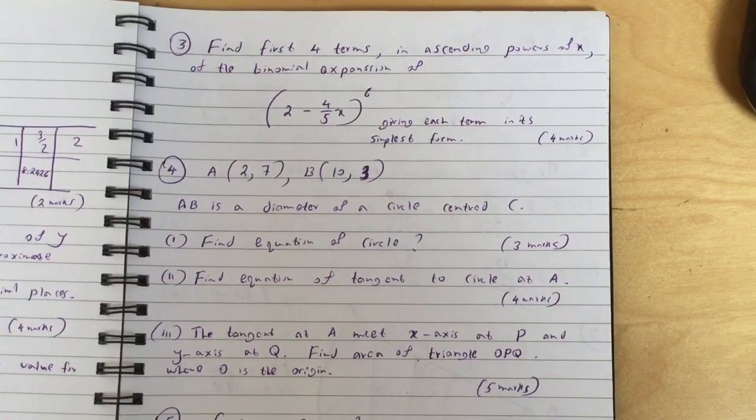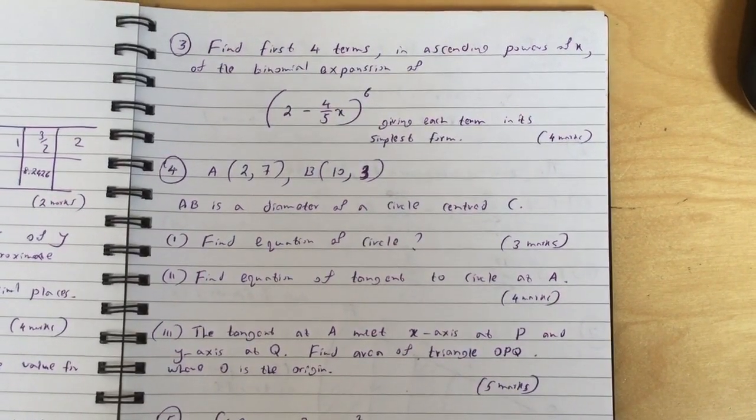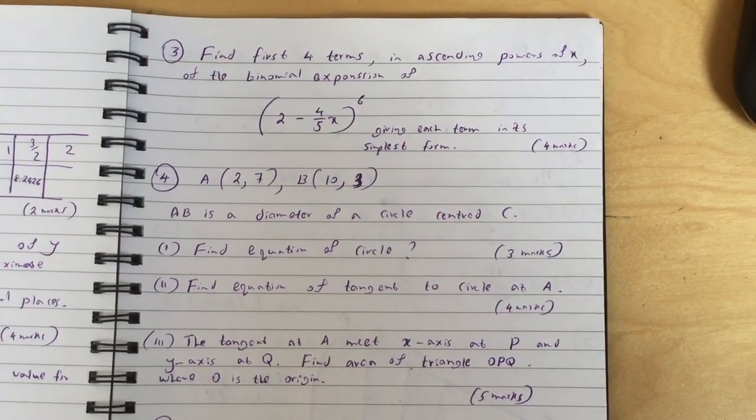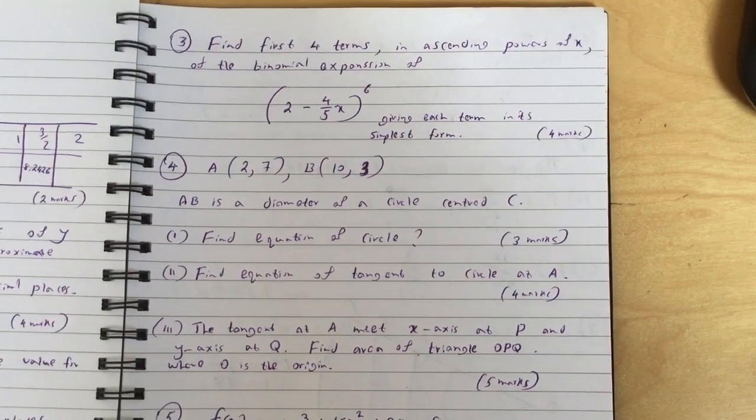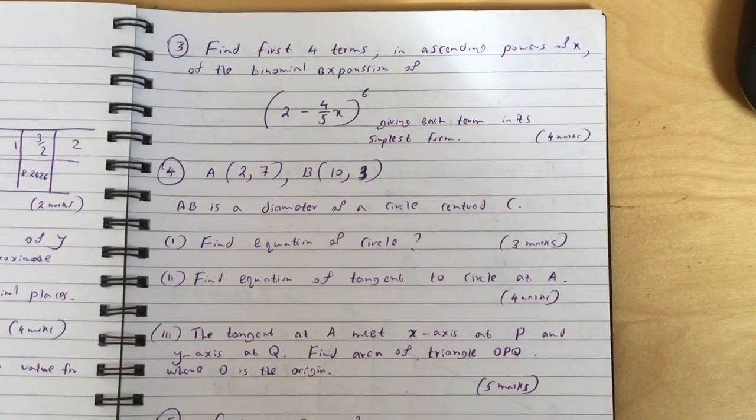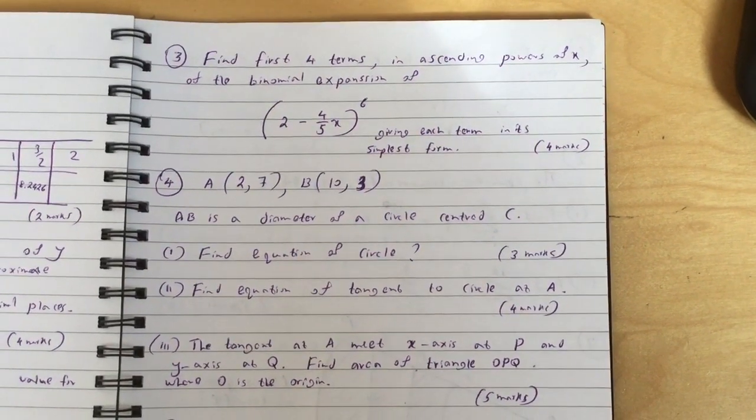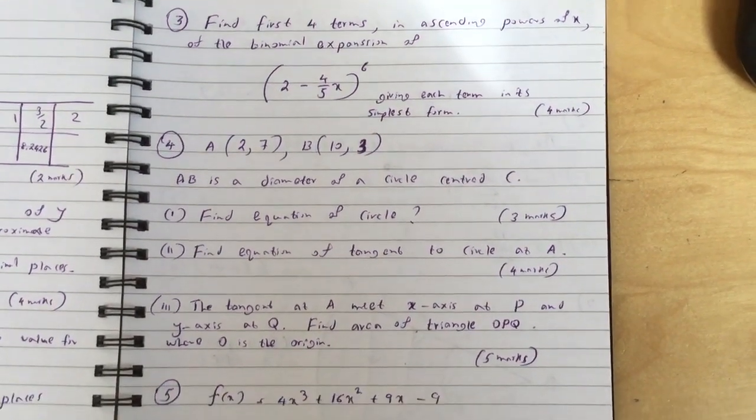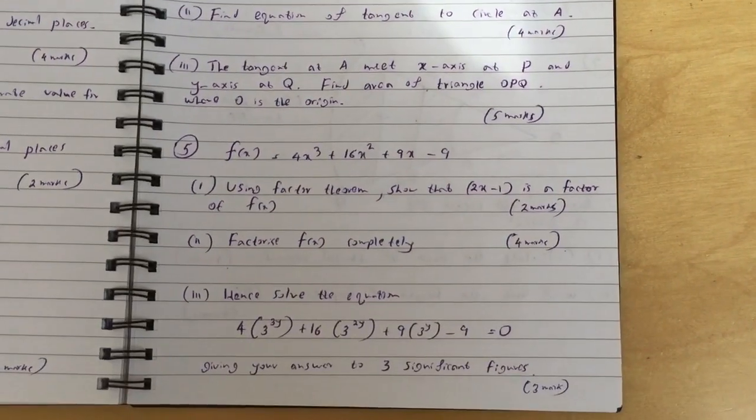Part two: find equation of tangent to circle at A. Part three: the tangent at A meets x-axis at P and y-axis at Q. Find area of triangle OPQ where O is the origin.